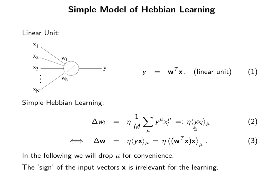For neurons it does not make sense to talk about negative firing rates, but in this linear model we can have negative activities, so this is a generalization of the Hebb postulate. The pointy brackets indicate averaging over all input patterns mu — Xi varies across different input patterns and produces different outputs, so this is the average over all input patterns. Eta is just a learning rate, a small constant.